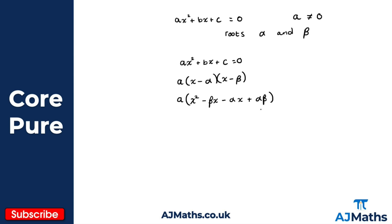Now expanding with the a on the outside, we get ax squared, minus a alpha x, minus a beta x, and then plus a alpha beta.